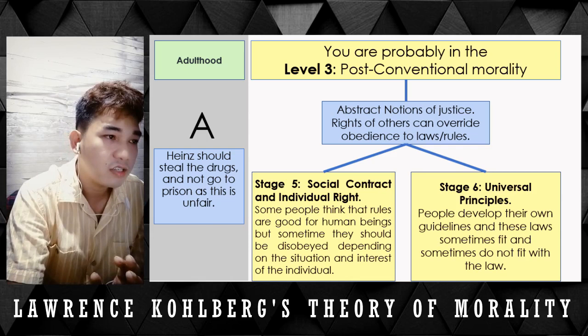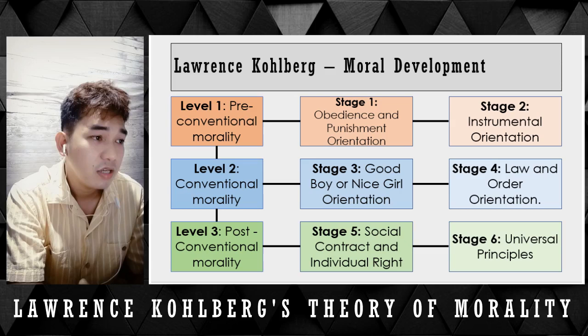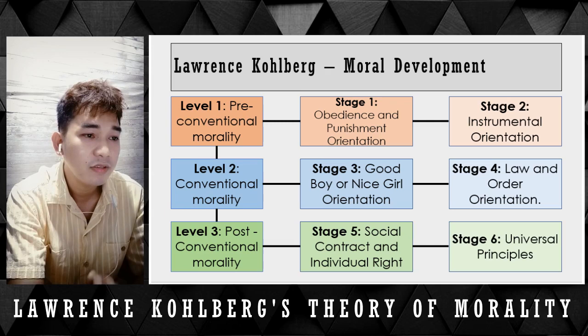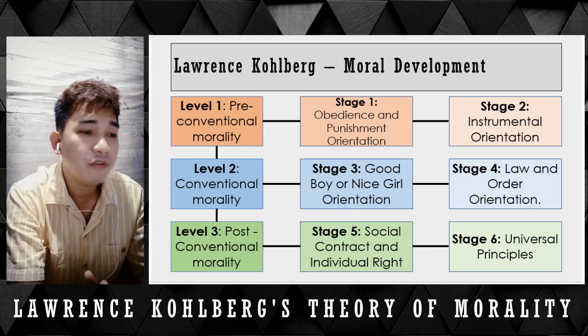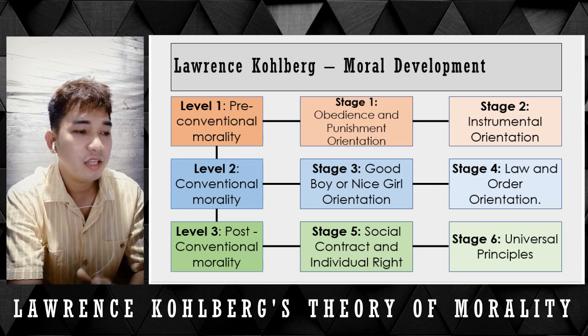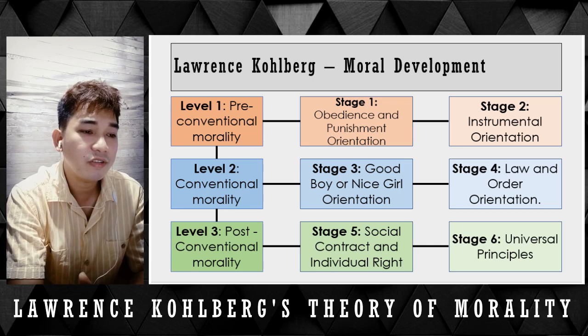So those are the levels and stages of Kohlberg's moral development. To summarize: Level 1, pre-conventional morality — Stage 1, obedience and punishment orientation; Stage 2, instrumental orientation. Level 2, conventional morality — Stage 3, good boy or nice girl orientation; Stage 4, law and order orientation. Level 3, post-conventional morality — Stage 5, social contract and individual rights; Stage 6, universal principles.